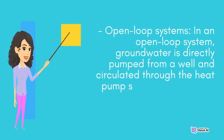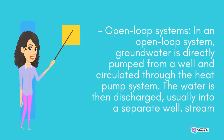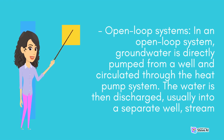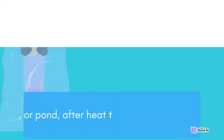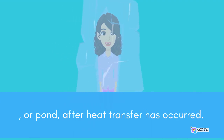In an open-loop system, groundwater is directly pumped from a well and circulated through the heat pump system. The water is then discharged, usually into a separate well, stream, or pond, after heat transfer has occurred.